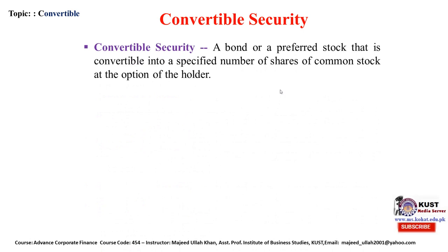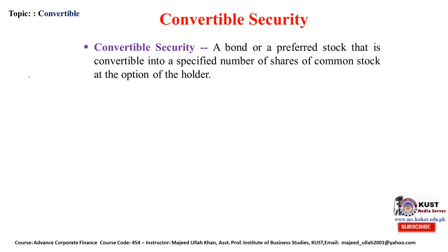A convertible security is a bond or preferred stock that is converted into a specified number of shares of common stock at the option of the holder. It is called a convertible security because this type of asset has specific characteristics — for example, it may be a straight preferred stock, a debenture, or any bond. These are financial securities that receive interest each year.